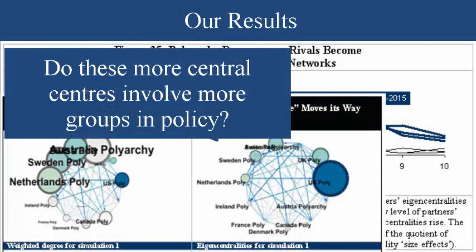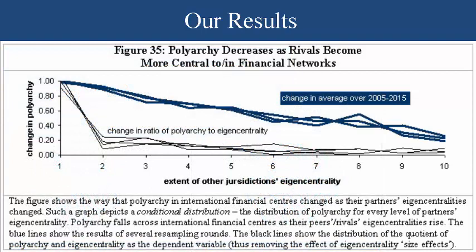Figure 35 shows the way that polyarchy changes in response to other jurisdictions' financial centrality in the international financial network. What Figure 35 does specifically is look at something called a Bayesian conditional distribution.